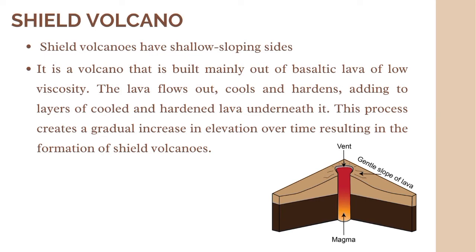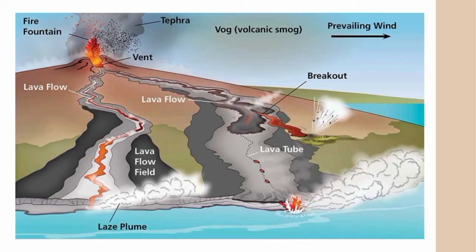Examples are volcanoes in Hawaii and Iceland, which produce the least destructive eruptions. Mauna Loa and Mauna Kea, the two largest volcanoes on the island of Hawaii, are about 30,000 feet tall when measured from their bases on the bottom of the ocean — 16,000 feet below sea level — to their tops at about 14,000 feet above sea level. The lava flows out, cools, and hardens, adding layers of cooled and hardened lava, creating a gradual increase in elevation over time, resulting in the formation of shield volcanoes. As you can see in the picture, that is what the anatomy of a shield volcano looks like.